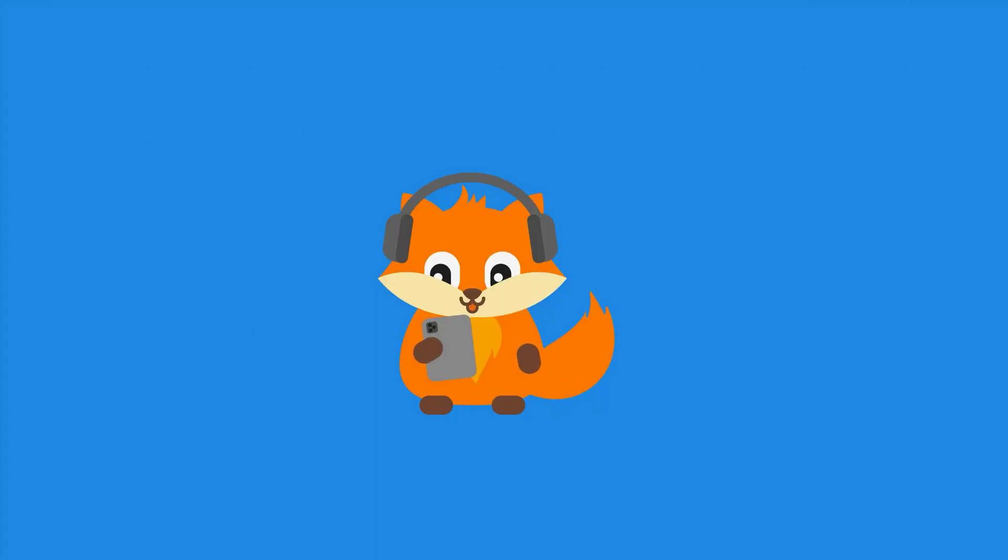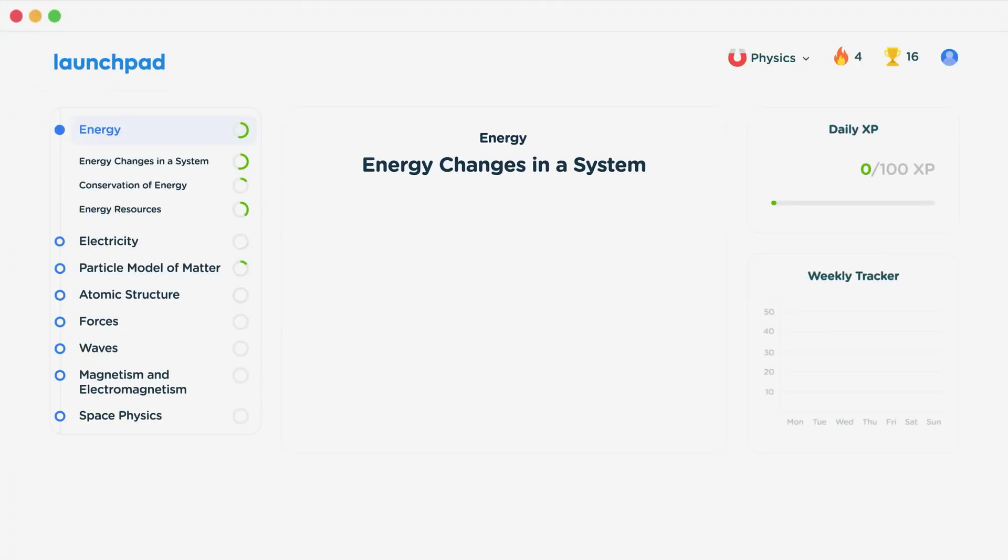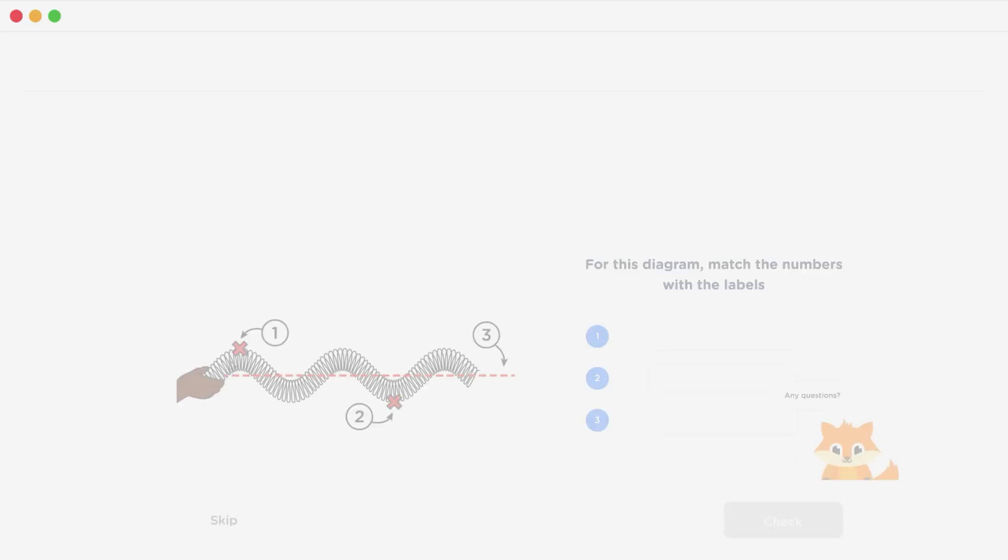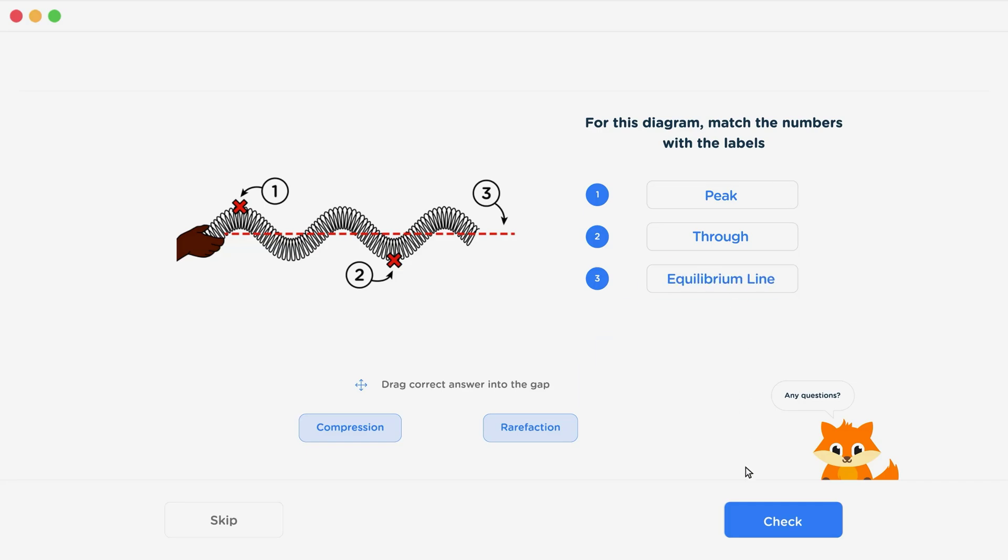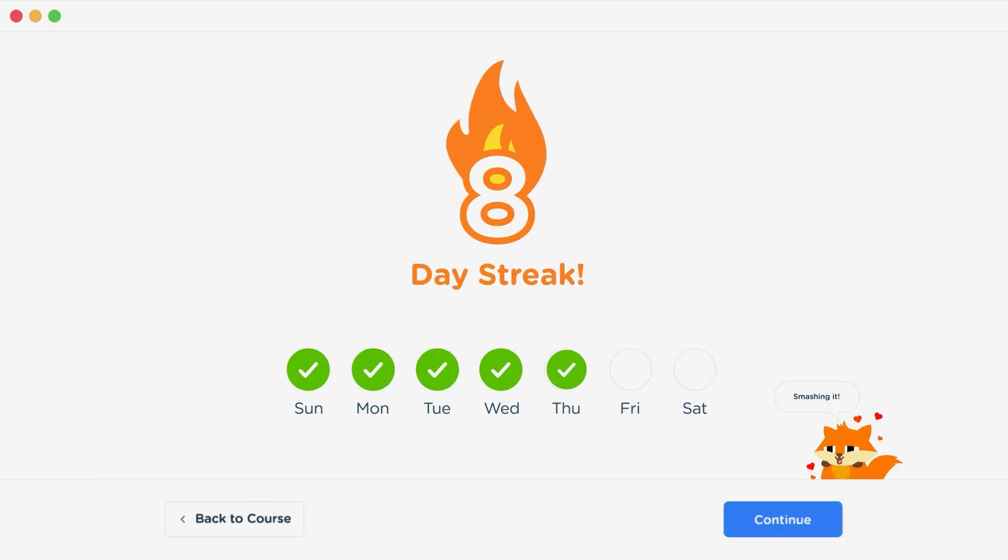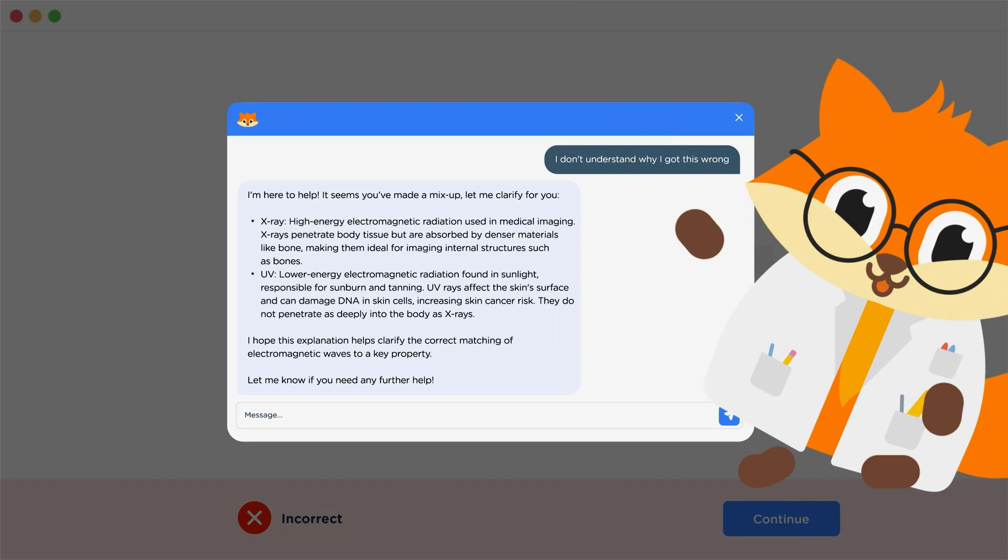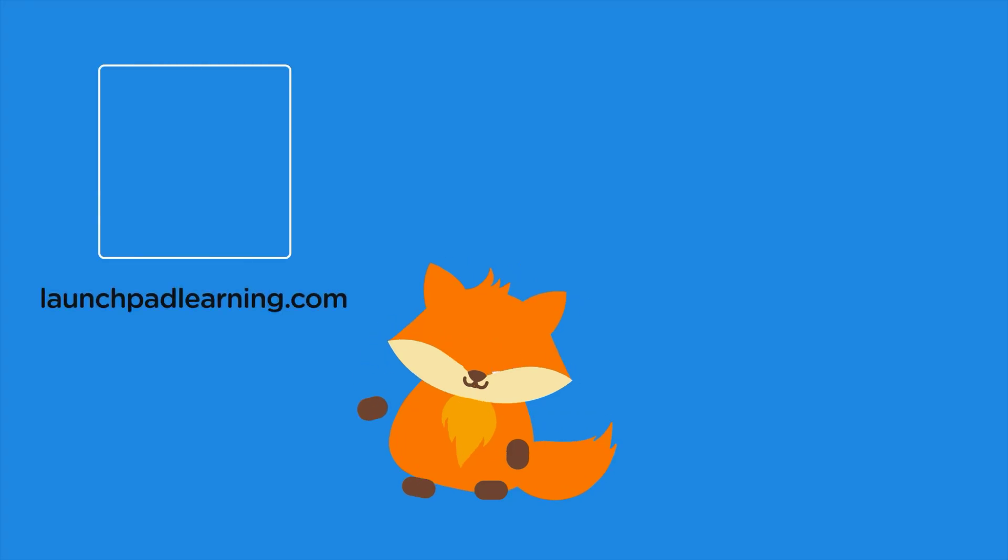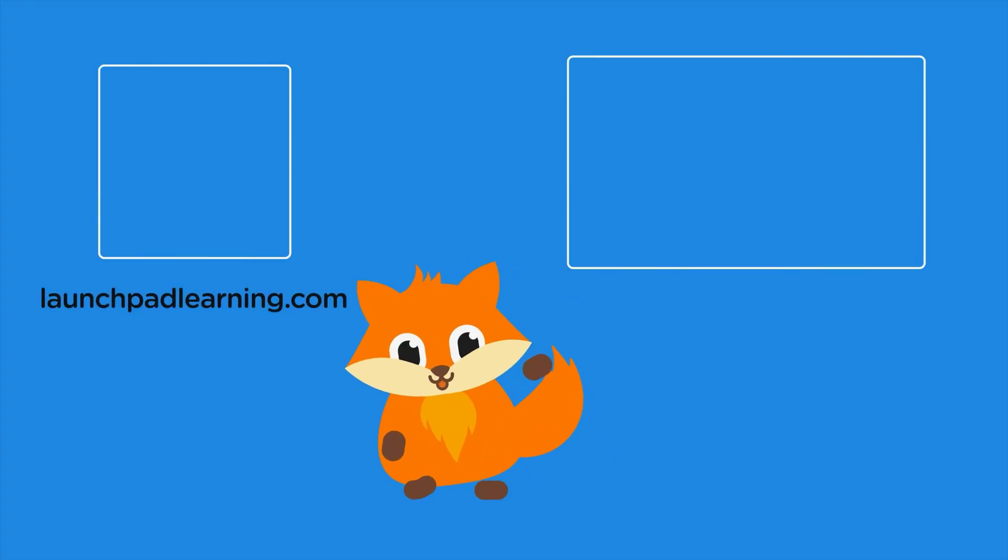Thanks for watching. If you want to take your GCSE revision to the next level, head over to launchpadlearning.com and check out our smart learning platform that's been designed to get you top results in your exams. We cover your whole specification and make revision fun, with interactive quizzes, easy to follow videos and more. You'll be kept motivated by your own AI tutor who's here to support you every step of the way. To check it out for yourself, click here. Or click here to keep watching a selection of the videos from our full GCSE Physics course. See you there!